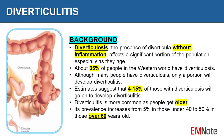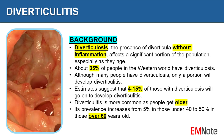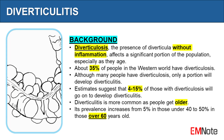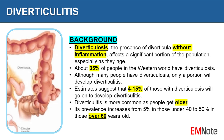Diverticulosis, the presence of diverticula without inflammation, affects a significant portion of the population, especially as they age. About 35% of people in the western world have diverticulosis. Although many people have diverticulosis, only a portion will develop diverticulitis. Estimates suggest that 4–15% of those with diverticulosis will go on to develop diverticulitis.